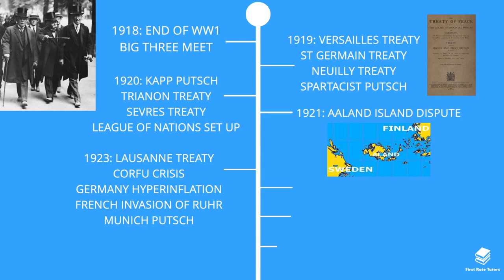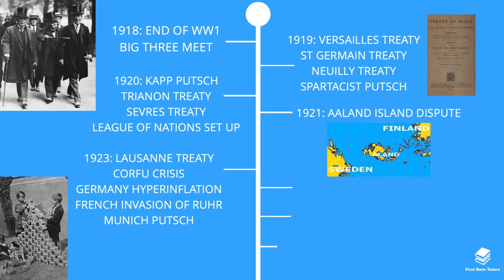Also during 1923, this was a really challenging year for Germany — they faced hyperinflation, when the German currency the mark lost its value. As you can see in this image, children were even playing with the worthless banknotes. Because Germany was unable to keep up with its reparations, France invaded the Ruhr, the rich industrial area in Germany.